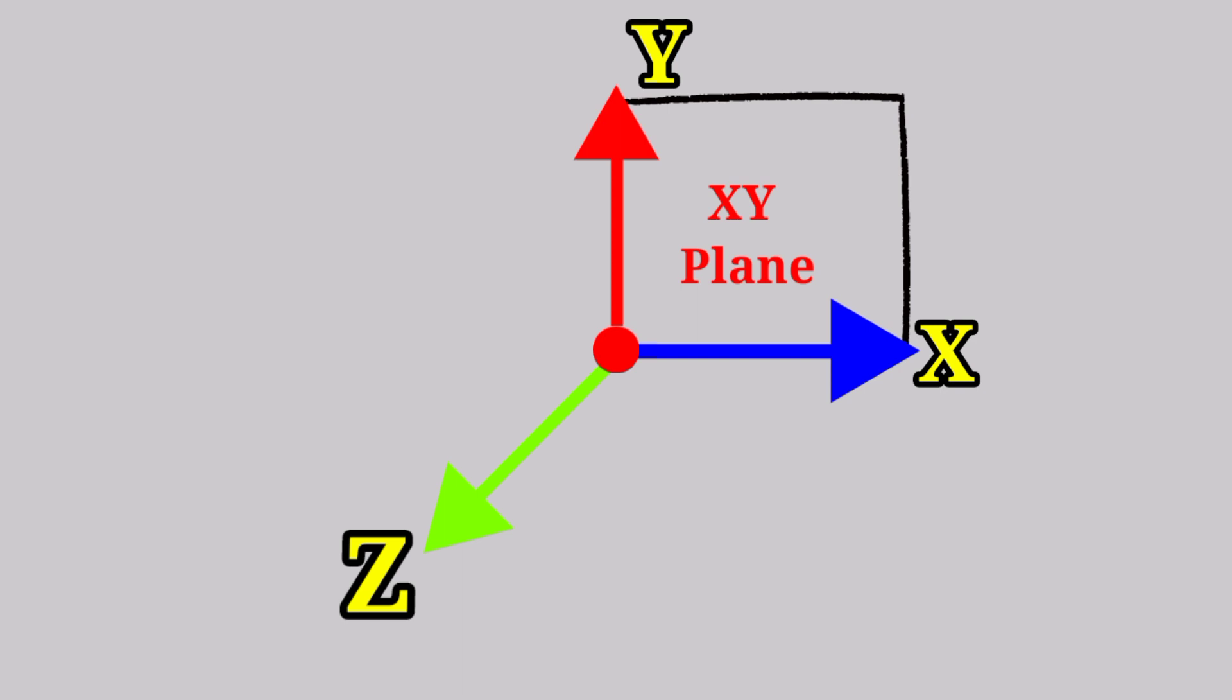Similarly, the planes that would be defined by the y and z-axis and planes that are parallel to this plane would be called the yz plane. And the plane that would be defined by the x and the z-axis would be called the xz plane, and all planes that would be parallel to this plane would also be called the xz planes. Now xy, yz, and zx are called global planes.